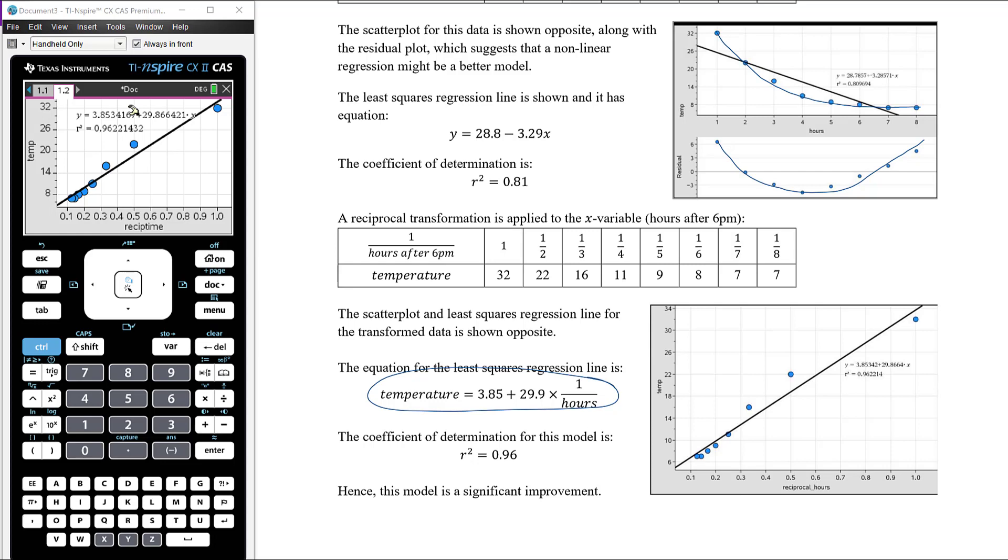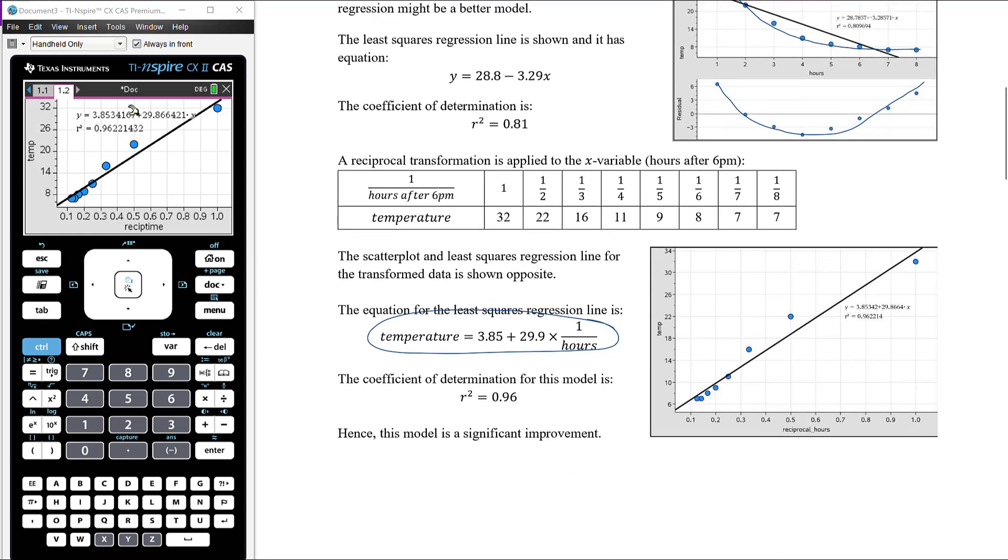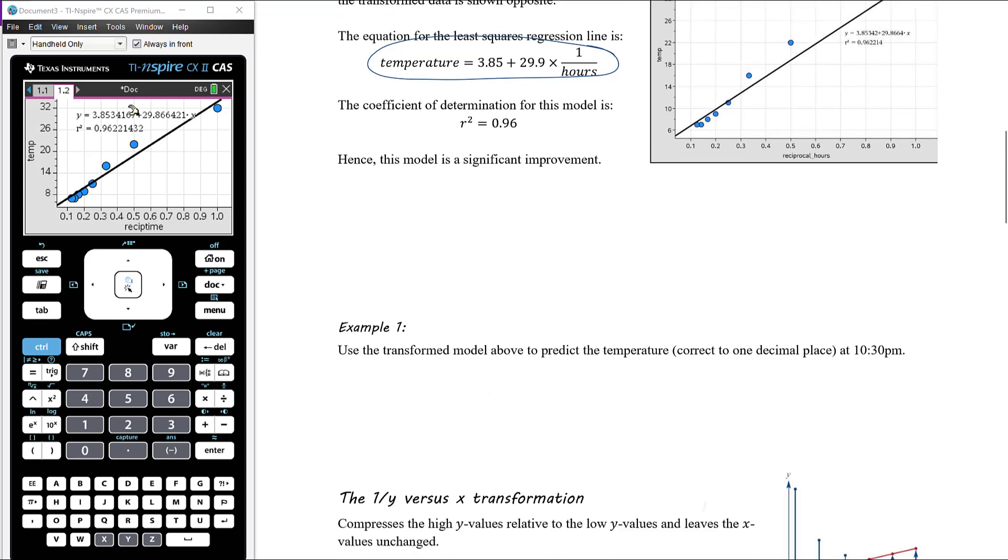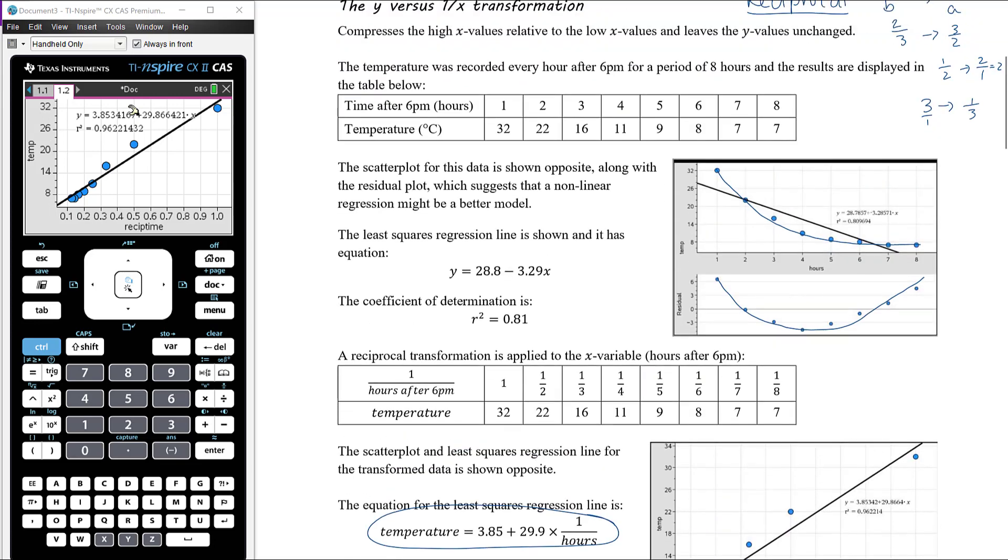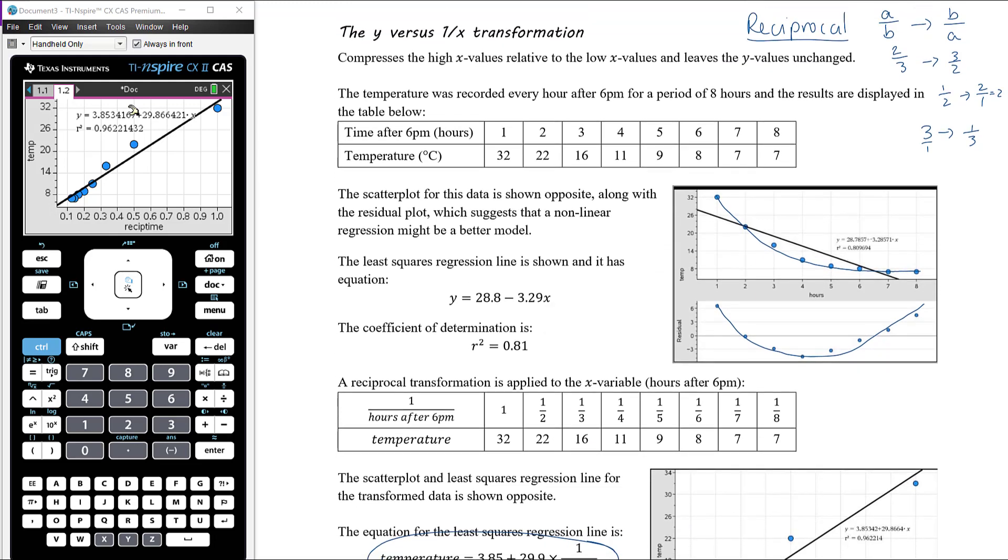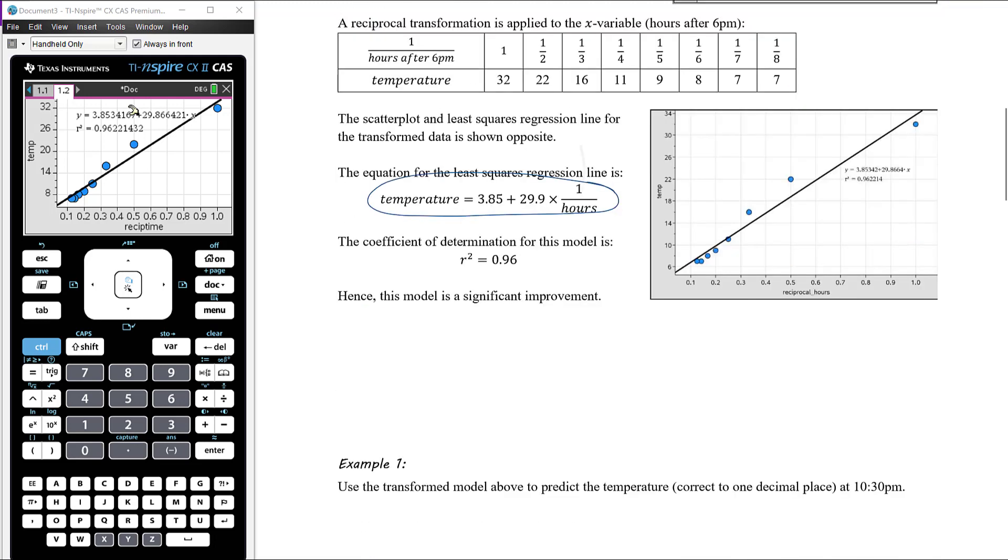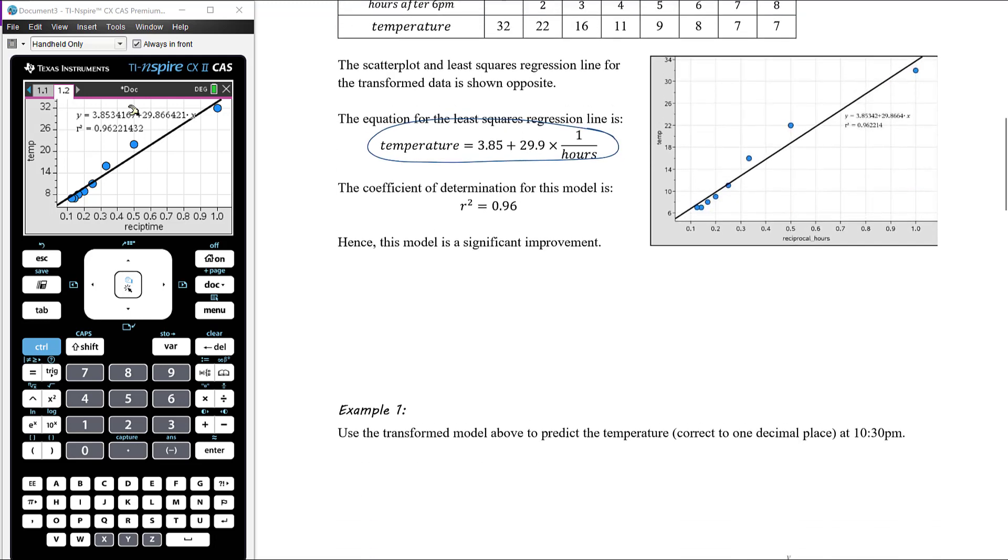Let's have a look at a quick example using this same model. Use the transformed model above to predict the temperature correct to one decimal place at 10:30 pm. Let's go back up to how our time was measured. Time is in hours after 6 pm, so therefore 10:30 pm is four and a half hours after 6 pm. So 10:30 pm is going to be when time is 4.5.